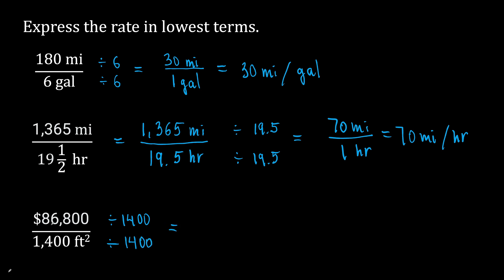Using the calculator, 86,800 divided by 1,400 gives you 62 dollars over 1 square foot, since 1,400 divided by 1,400 equals 1. We can also write this rate as 62 dollars per square foot.